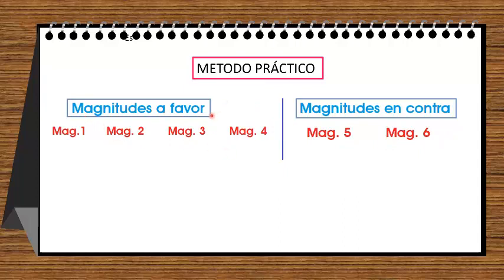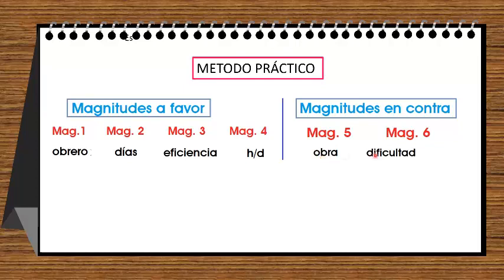¿Quiénes van a ser magnitudes a favor? Los magnitudes que van a estar siempre a favor son: obrero, guías, eficiencia, horas diarias, entre otros. Las magnitudes que van a estar en contra generalmente son solo dos o hasta máximo tres: obra, dificultad o también dureza. Cualquier otro magnitud va a estar en magnitudes a favor — ese es el trucazo: separar en dos grupos.